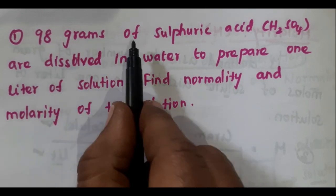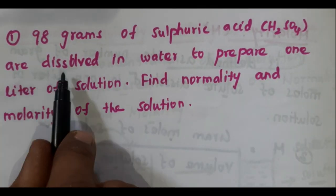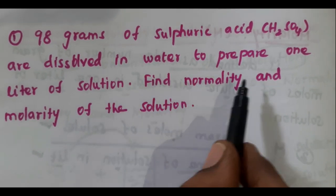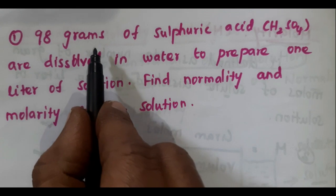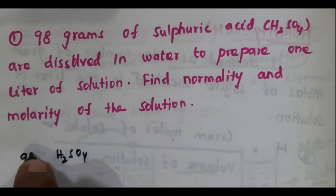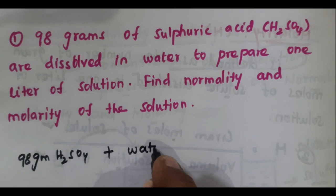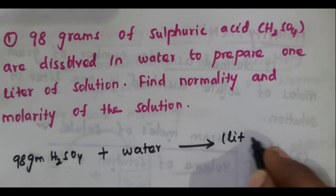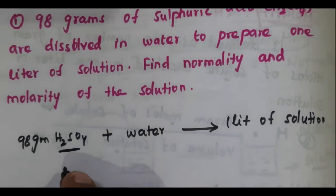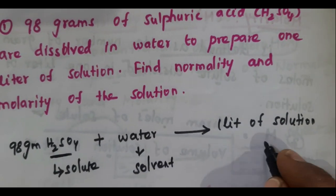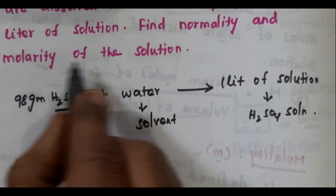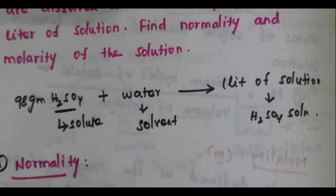Problem 1: 98 grams of sulfuric acid H2SO4 are dissolved in water to prepare one liter of solution. Find the normality and molarity of the solution. Here, H2SO4 is the solute and water is the solvent, preparing one liter of H2SO4 solution. We will calculate the normality of the solution.